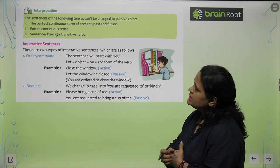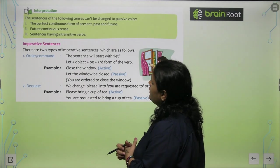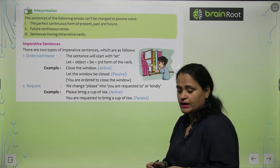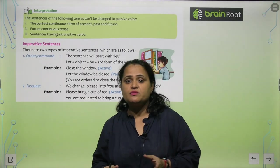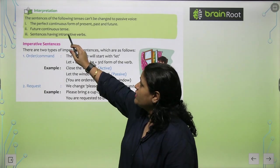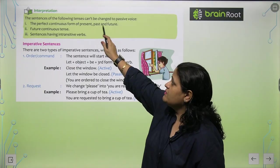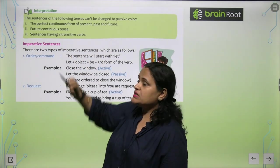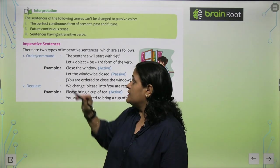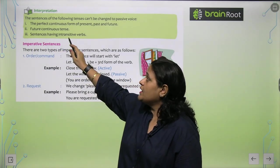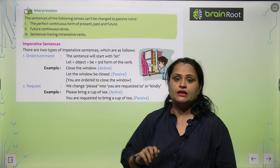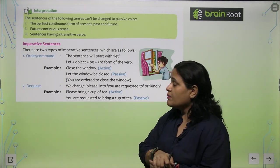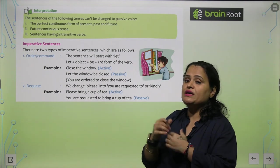The sentences of the following tenses can't be changed to Passive Voice. Kuch sentences aise hote hain jinhe hum Passive Voice mein change nahi kar sakte — jaise Perfect Continuous forms of present, past and future, Future Continuous tense. Sentences jo ke intransitive verbs ke saath hain, vo bhi Passive Voice mein nahi banaye jaate, because we need an object to make Passive Voice.